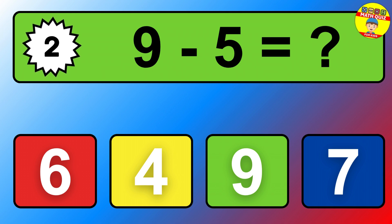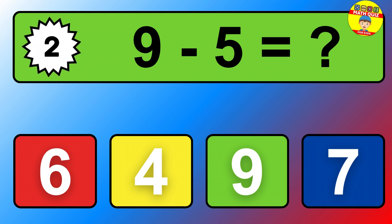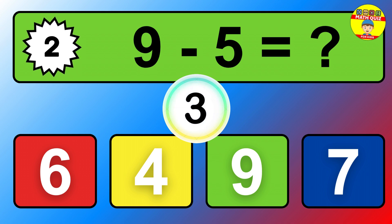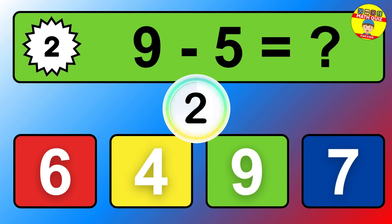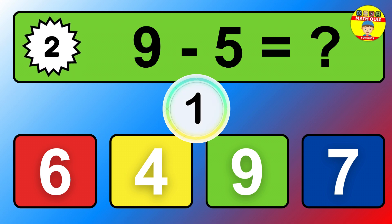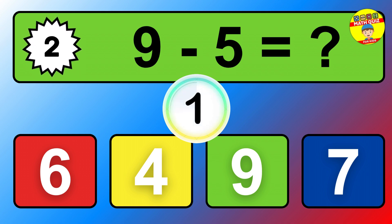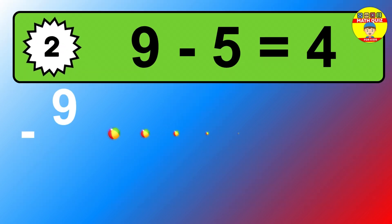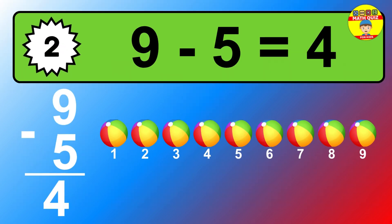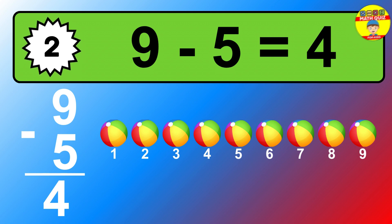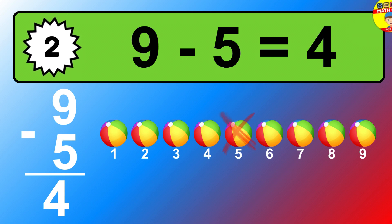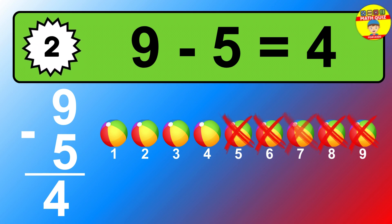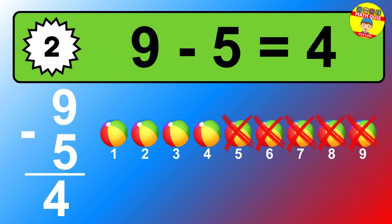Question two: nine minus five equals what? So the answer is nine minus five is four. Let's count it. One, two, three, four.